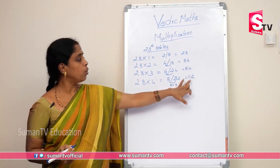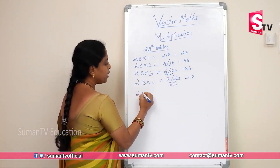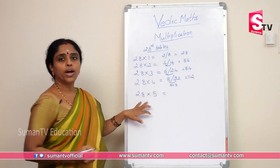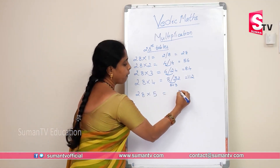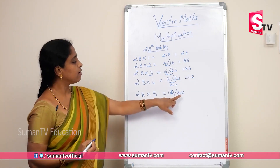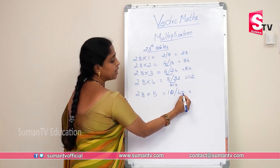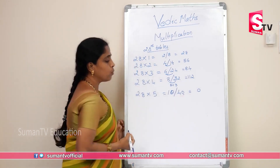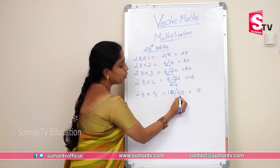28 × 4 is 112. Now 28 × 5: five eights are 40, five twos are 10. Keep 0 in unit place, carry the 4. Add: result is 140.